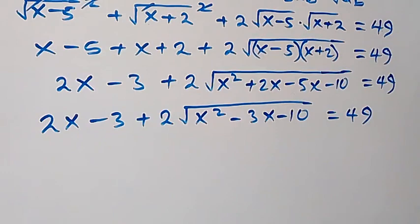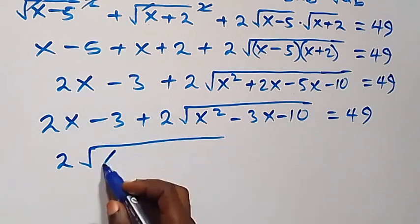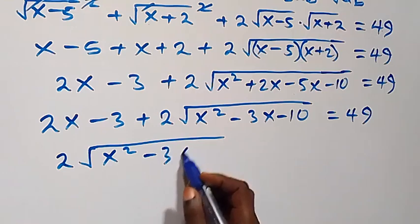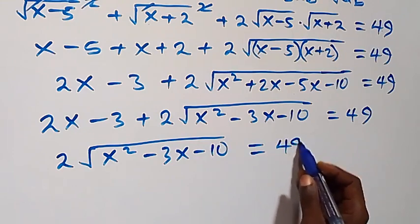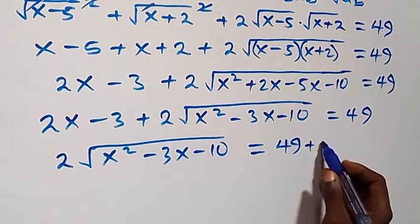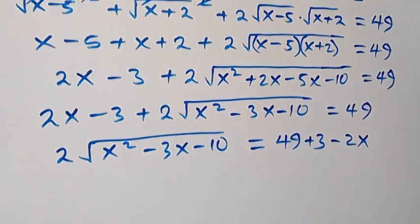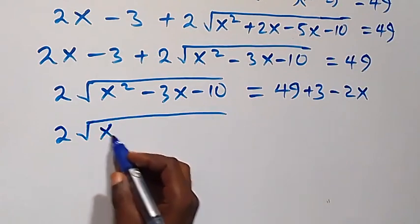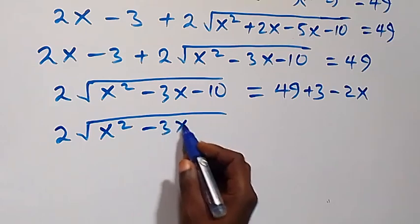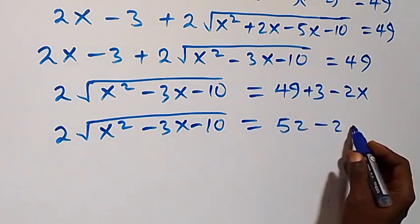We take 2x and minus 3 to the other side, and we are left with 2 times square root of x squared minus 3x minus 10 on this side, which equals 49 plus 3 minus 2x, giving us 2 times square root of x squared minus 3x minus 10 equals 52 minus 2x.